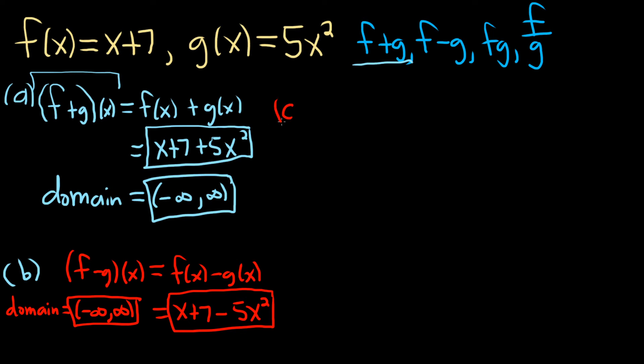Part c. We have to find f times g. So f times g of x. The way this is defined, it's defined as the product. So it's just f of x times g of x. This one might require a little bit more work.